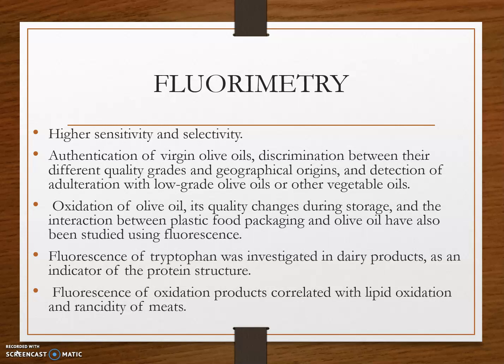Fluorescence of oxidation products is correlated with lipid oxidation and rancidity of milk. Minor components of oils such as tocopherols and chlorophylls can also be analyzed with this technique. Fluorescence was also used for discrimination of cheese type, ripening stages, and geographical origin. Riboflavin fluorescence was used as a marker of photo-oxidation due to light-induced changes in cheese and yogurts.